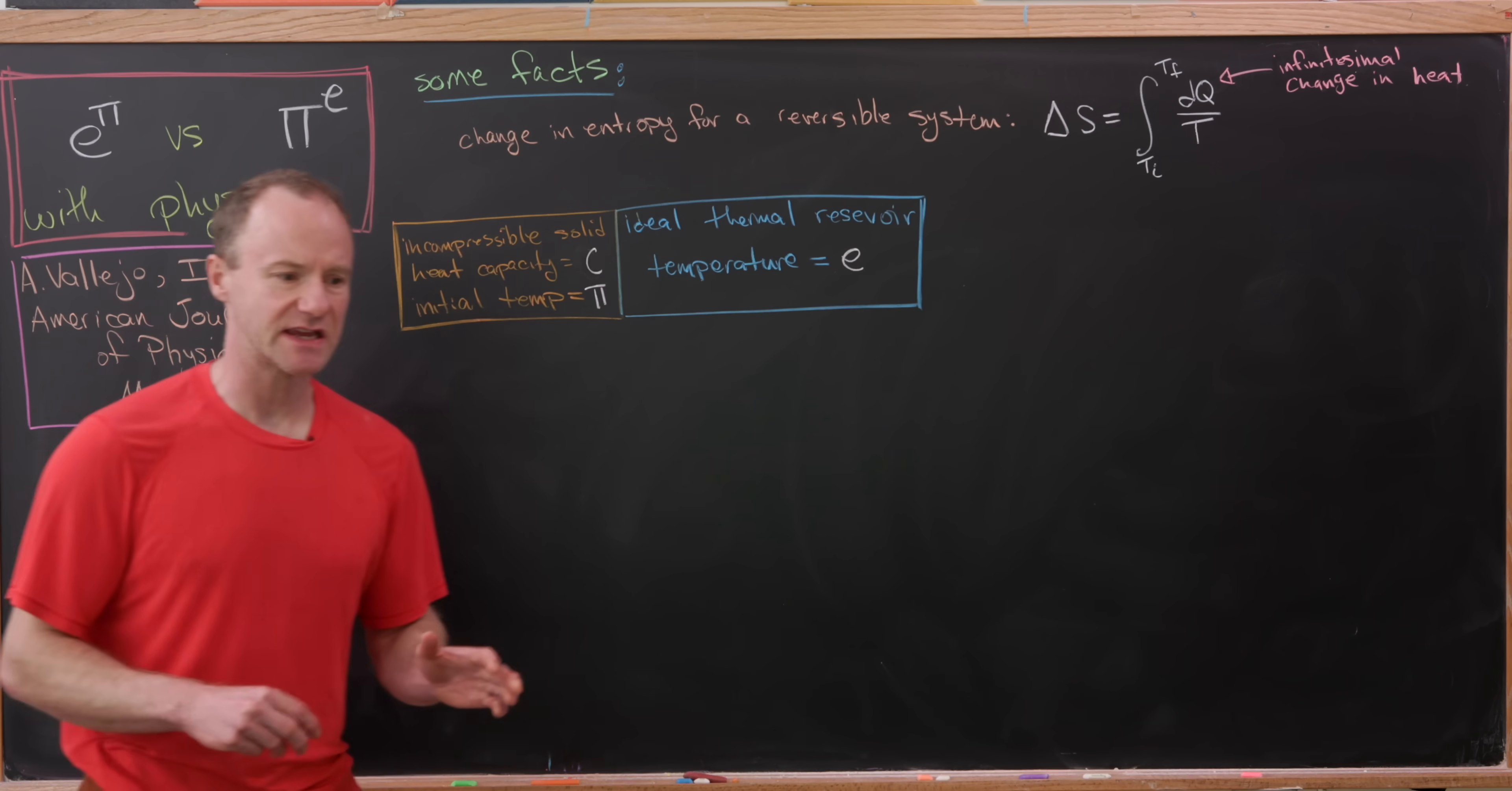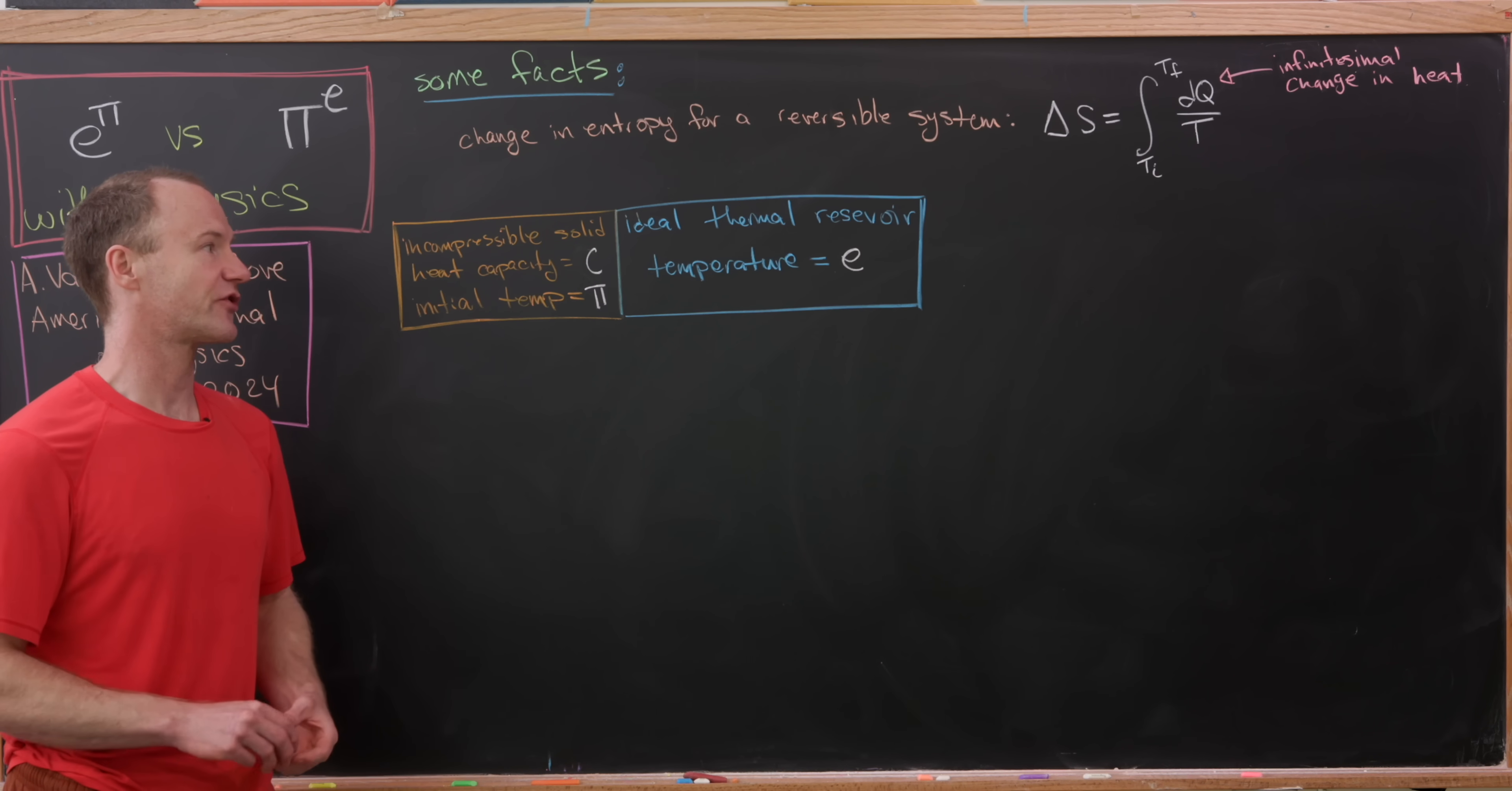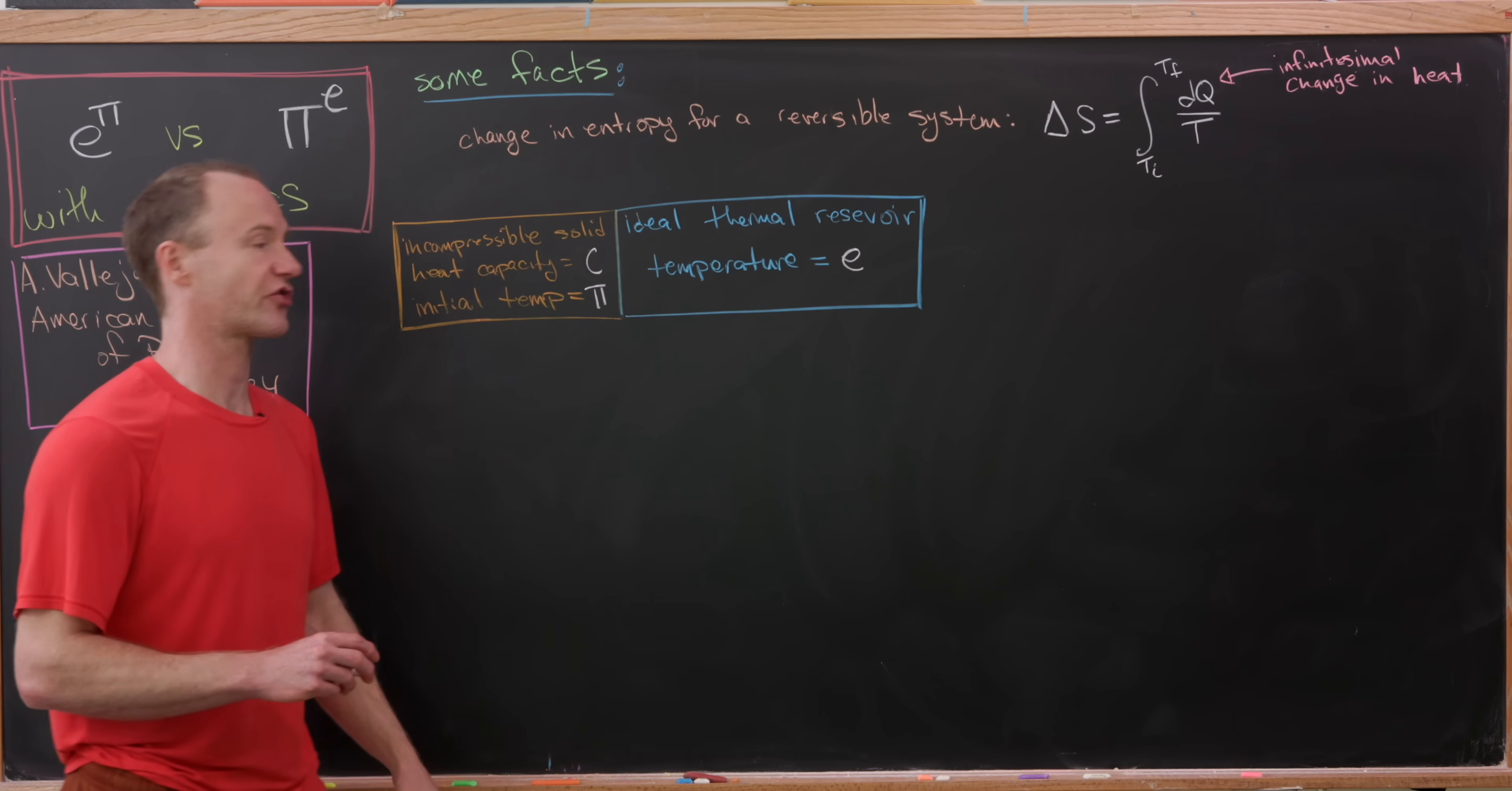Okay, so let's see how we can use all of these ideas to compare these two numbers. So we'll think about having an incompressible solid with a heat capacity of C and an initial temperature of pi. And we put that in contact with an ideal thermal reservoir where the temperature is E. And so obviously we know that pi is larger than E, so the heat is going to flow from this solid into this thermal reservoir.